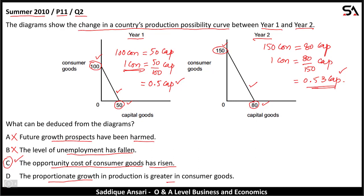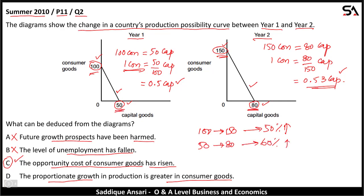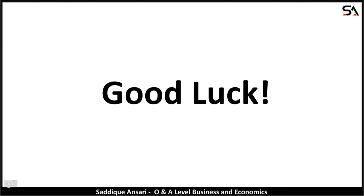Option D: the proportionate growth in production is greater in consumer goods. Growth in consumer goods from 100 to 150 is 50%. Growth in capital goods from 50 to 80 is calculated as (80 minus 50) divided by 50, multiplied by 100%, which equals 60%. So capital goods grew more. D is incorrect. Therefore, C is the correct answer. Thank you very much for watching this video.